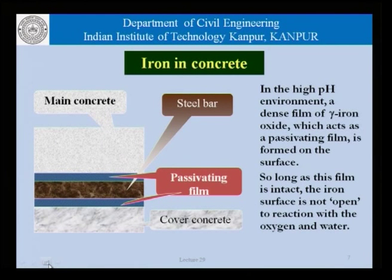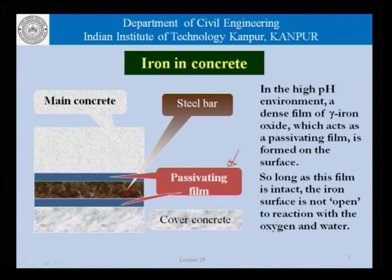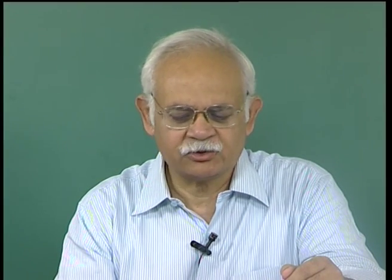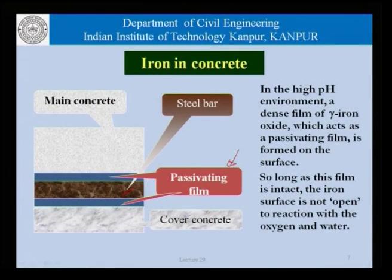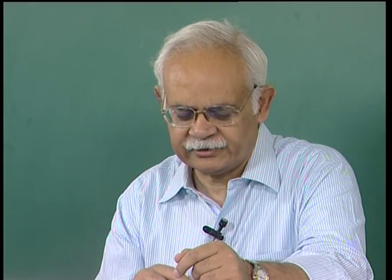This slide shows a mechanism that has been modeled to explain corrosion in concrete structures. We have this passivating film which forms on the reinforcing bars as a result of the high pH resulting from the formation of large amounts of calcium hydroxide in the system, which is due to the hydration of cements. So long as this passivating film is intact, the oxygen and water present in the neighborhood does not cause corrosion of the bar.